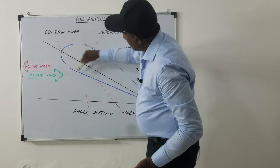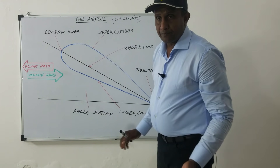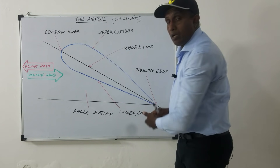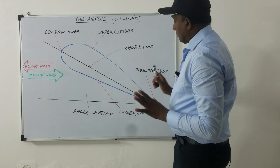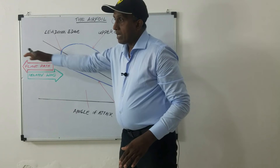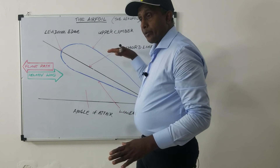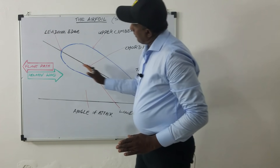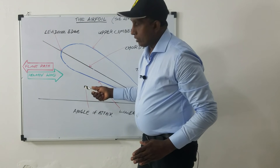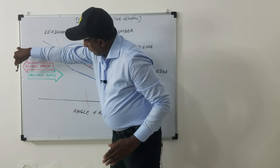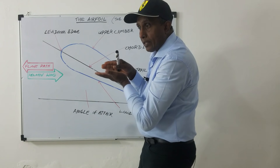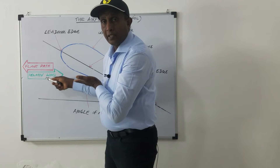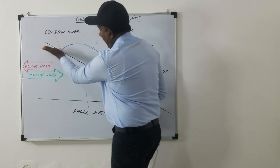The surface below the chord line is called the lower camber. If the airplane is moving forward, the direction of travel is called the flight path of the airplane. Relative wind is the direction of the airflow with respect to the wing. If a wing moves forward horizontally, the relative wind moves backward horizontally. Relative wind is parallel to and opposite the flight path of the airplane.